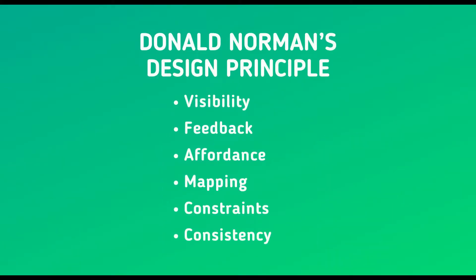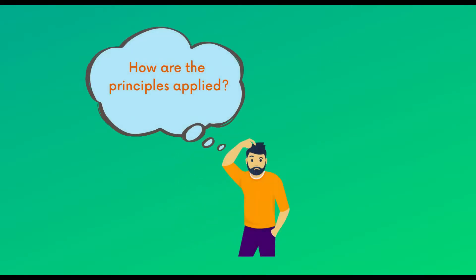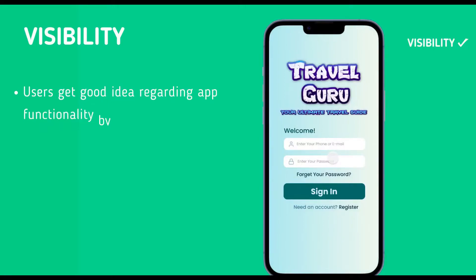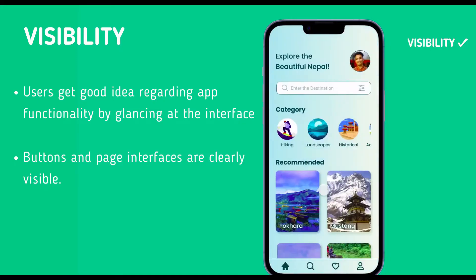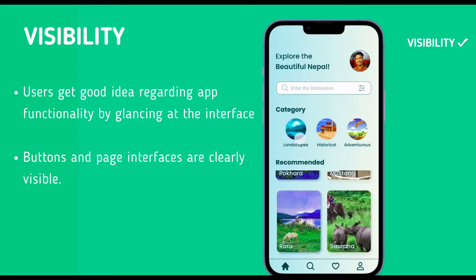The design principle we used is Donald Norman's design principle. For visibility, users get a good idea regarding app functionality by glancing at the interface. The buttons and page interface are clearly visible. The options are not cluttered and only the required options are used.